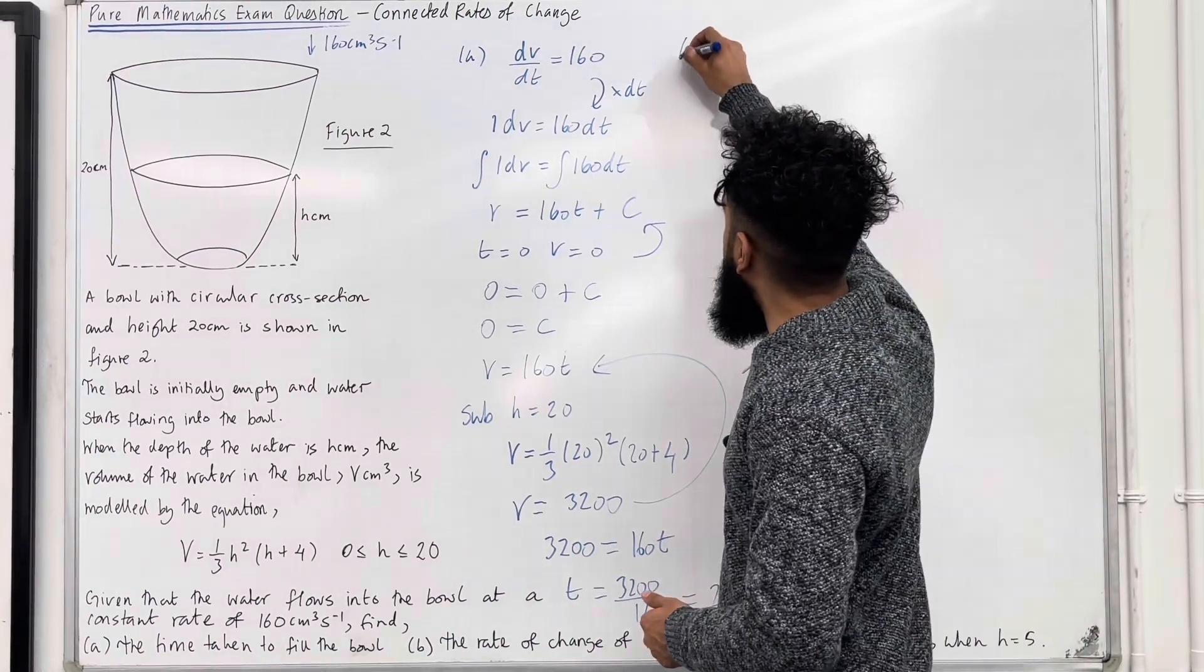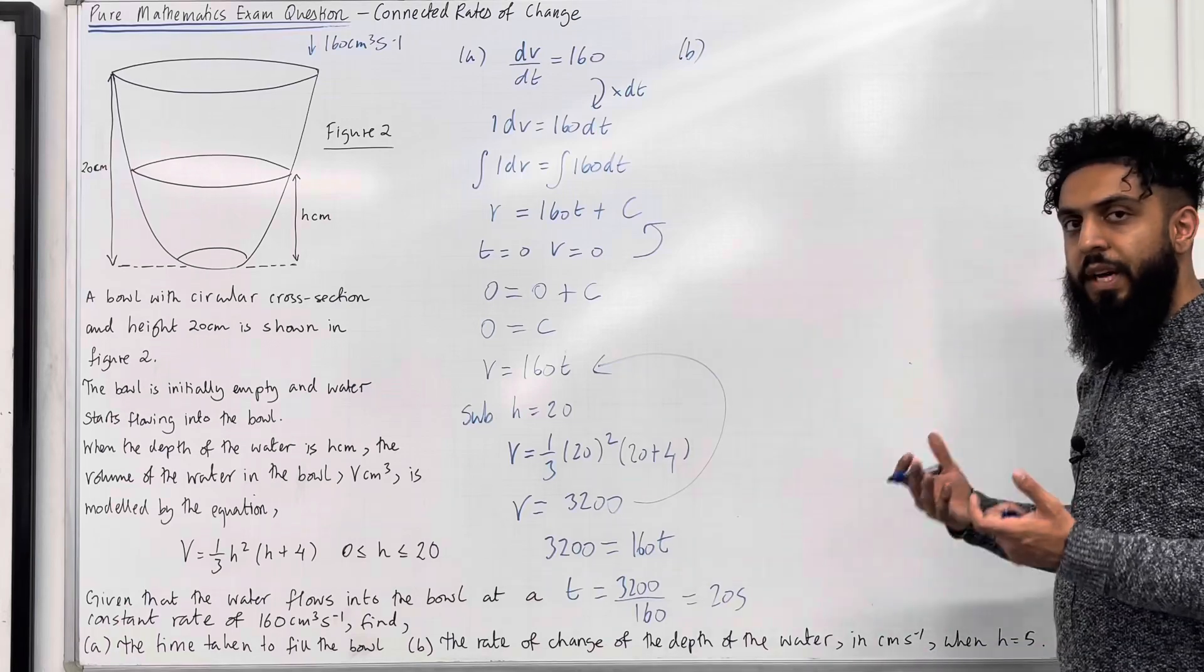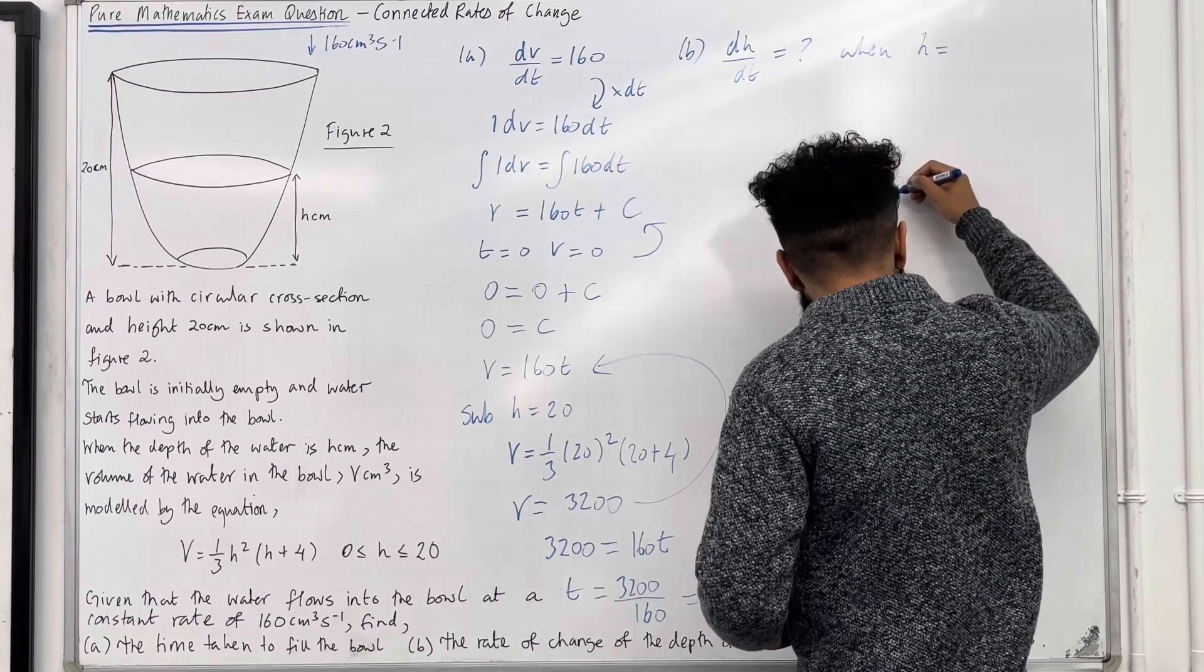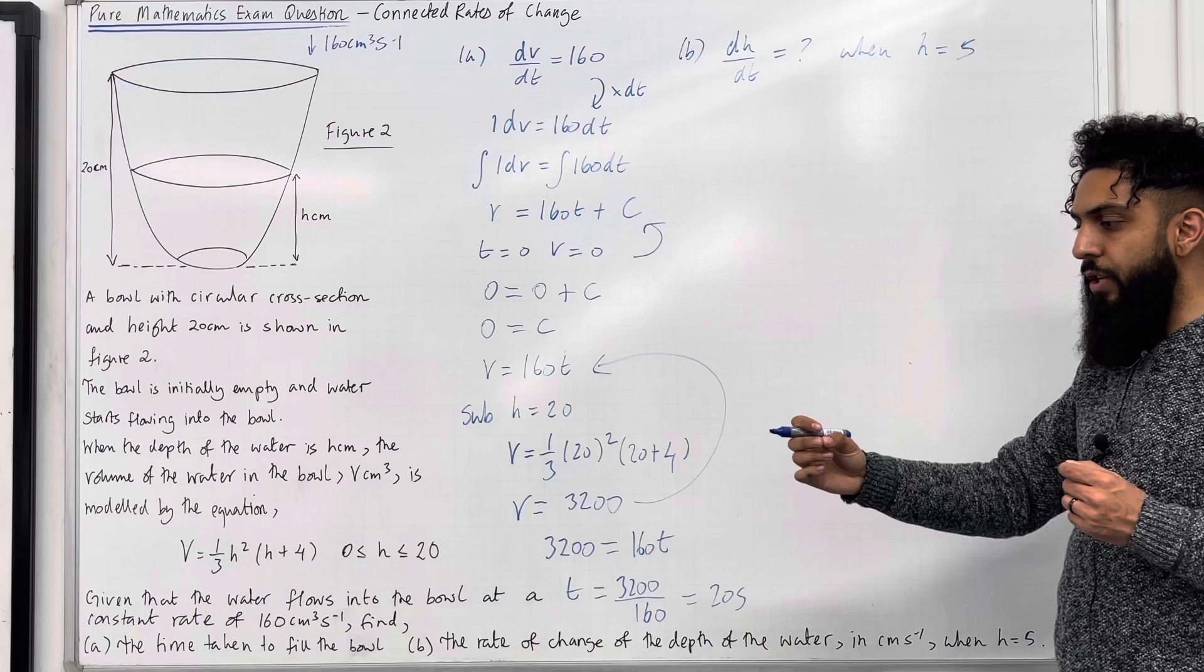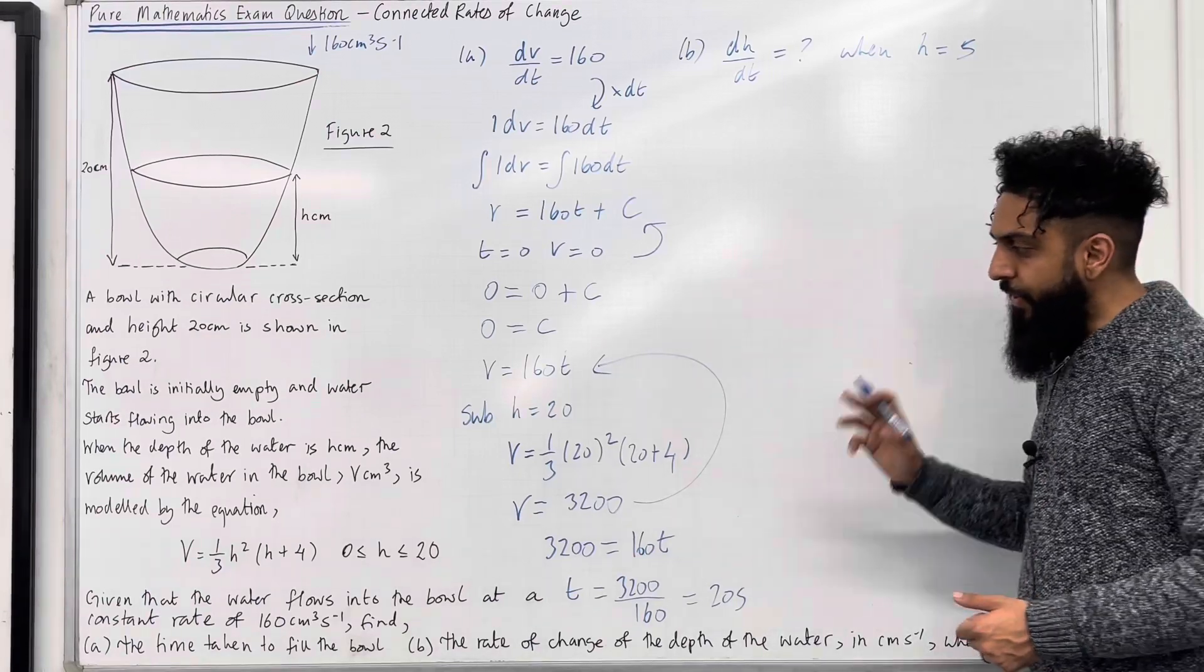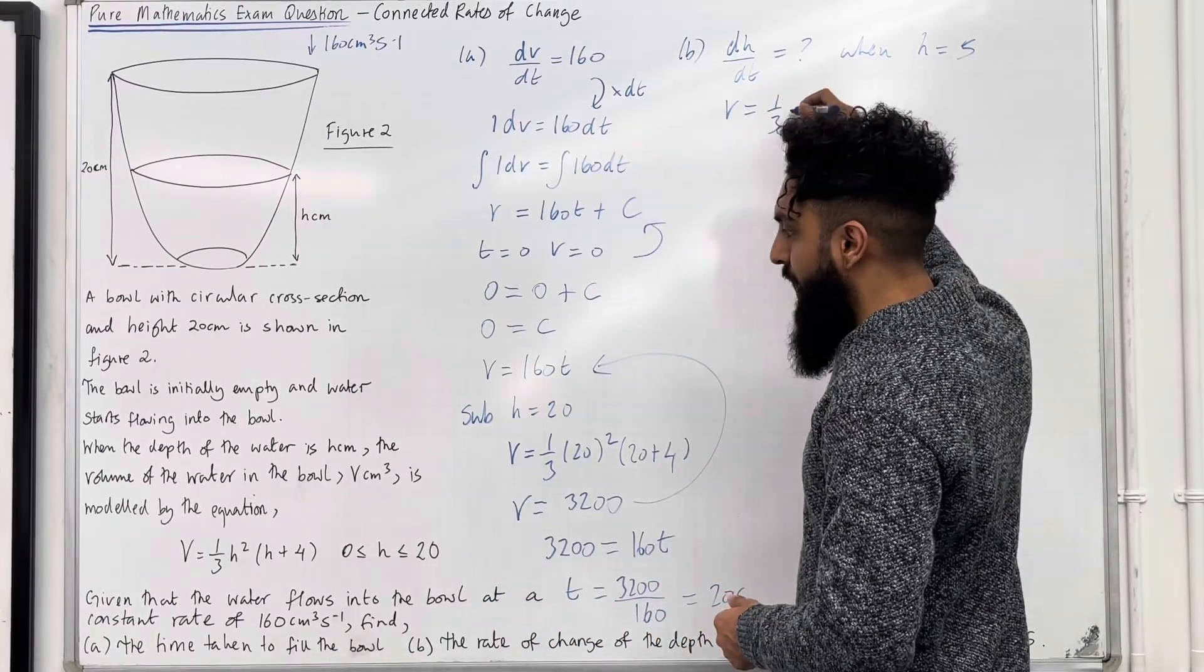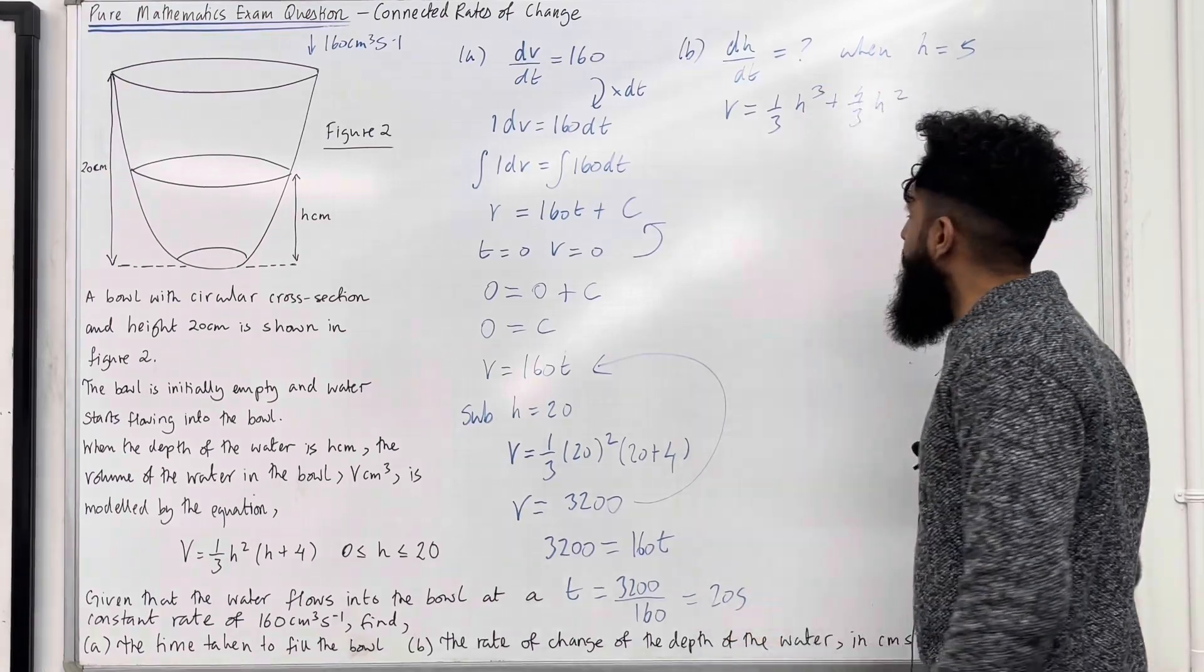Let's have a look at the solution to part B. If I dissect that sentence, essentially we're trying to calculate dh over dt when h is equal to 5. To find dh over dt, I need to set up two differentials, then I'm going to connect them to give me dh over dt. Let's start off with a volume formula. I'm going to expand that. If I expand the volume formula, I get 1/3 h³ plus 4/3 h².